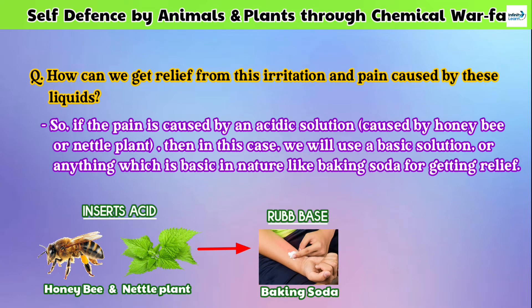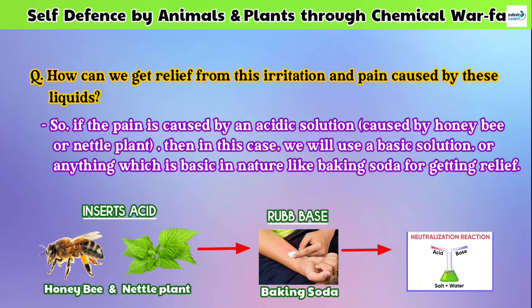When we rub baking soda on the area affected by the honey bee sting, it will convert to a neutral salt by the process of neutralization.